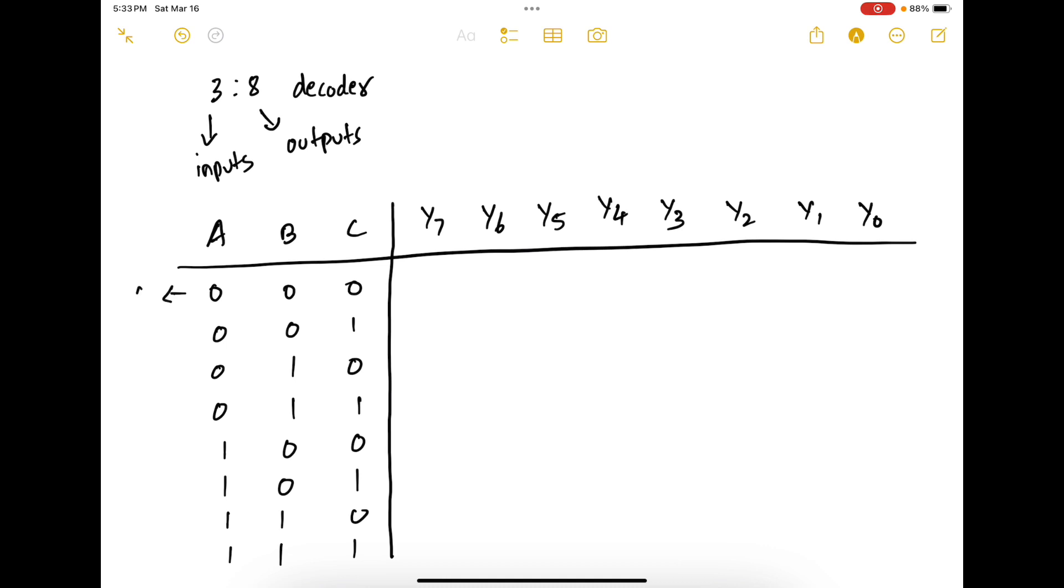So this is basically decimal 0, decimal 1, decimal 2, decimal 3, decimal 4, decimal 5, decimal 6, and decimal 7.